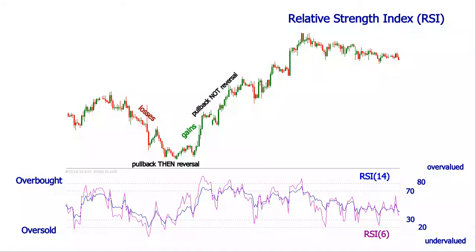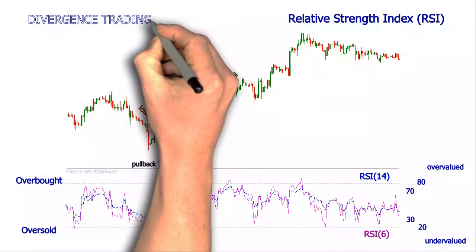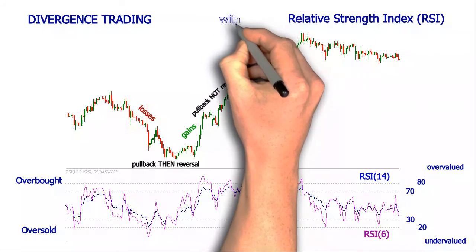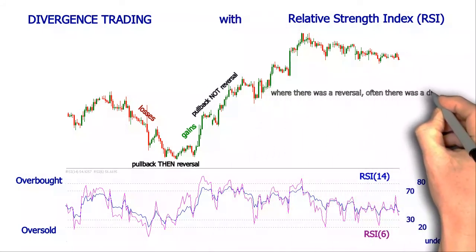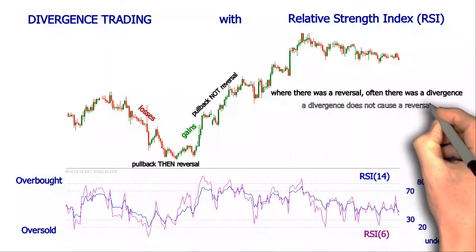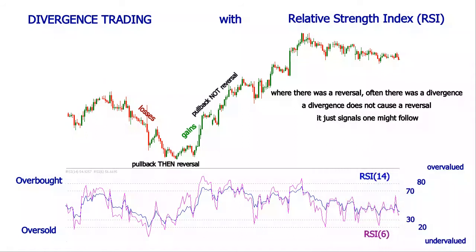A successful strategy the Relative Strength Index can be employed in is divergence trading. If it is properly set to fit the market conditions, the accuracy of the divergence signals can be increased. A divergence is considered to occur when the indicator's curve and the price evolution seem to have diverged — that happens when a new high or low of the price does not have a correspondence on the curve. It may be interpreted as a move that lacks the energy to be sustained much further.